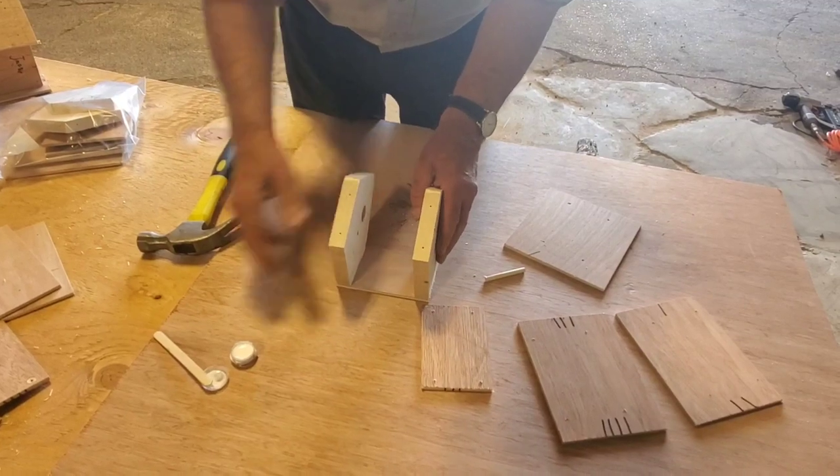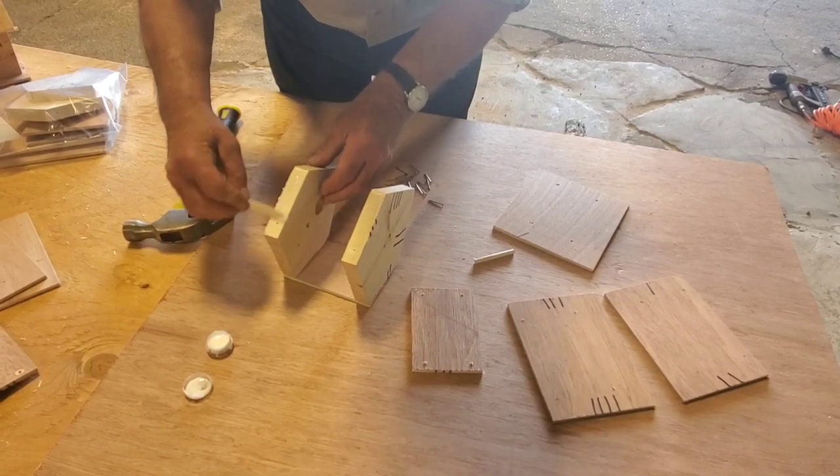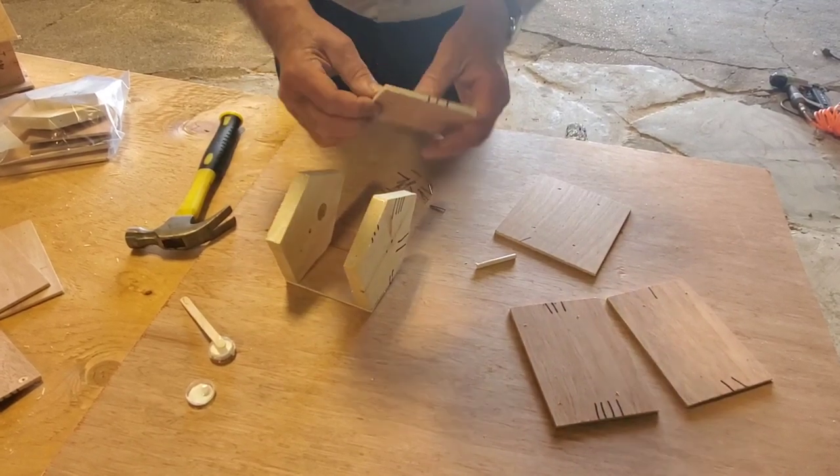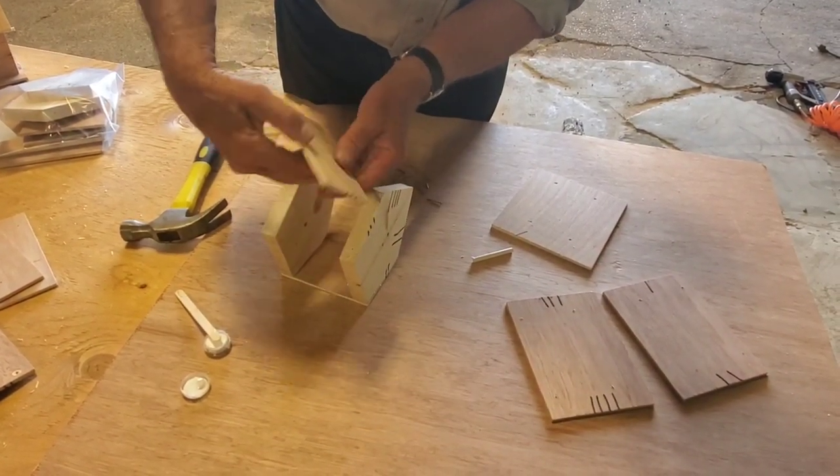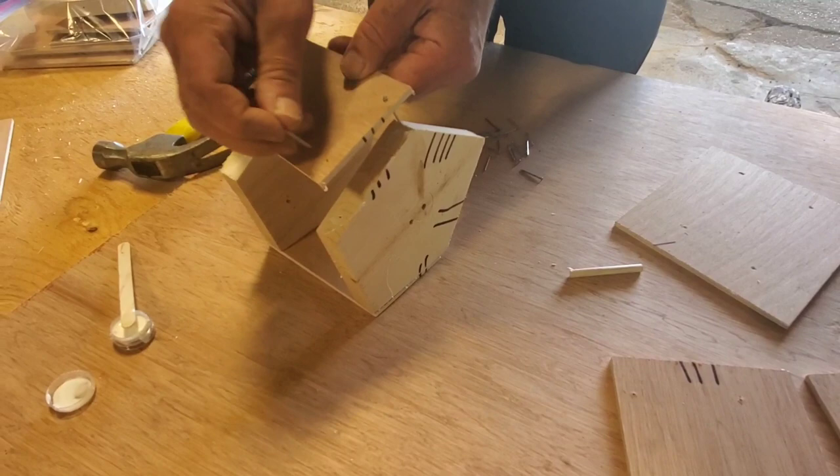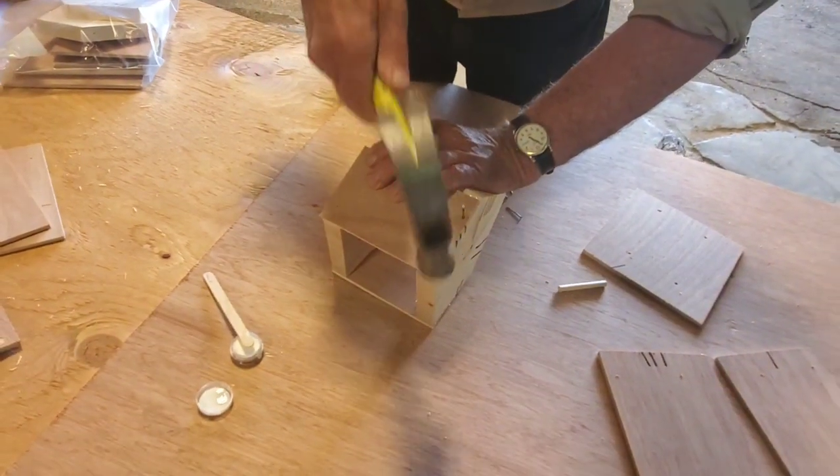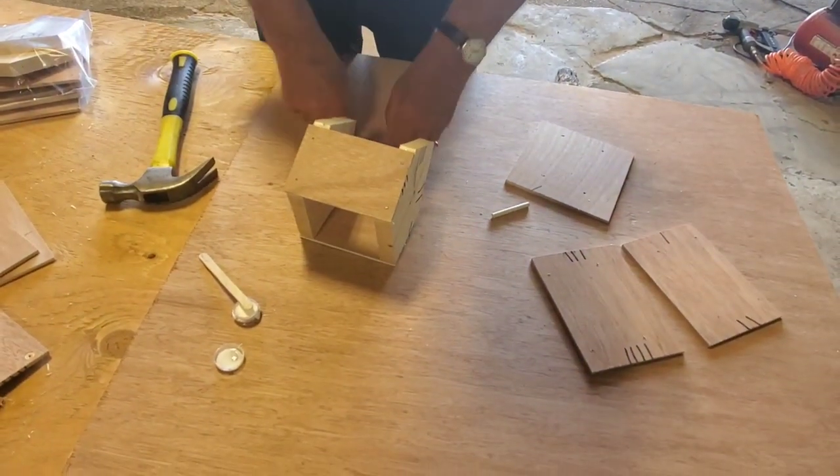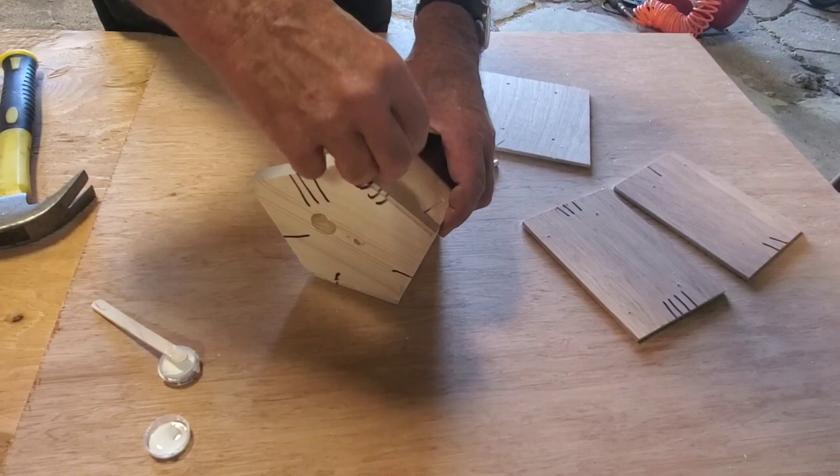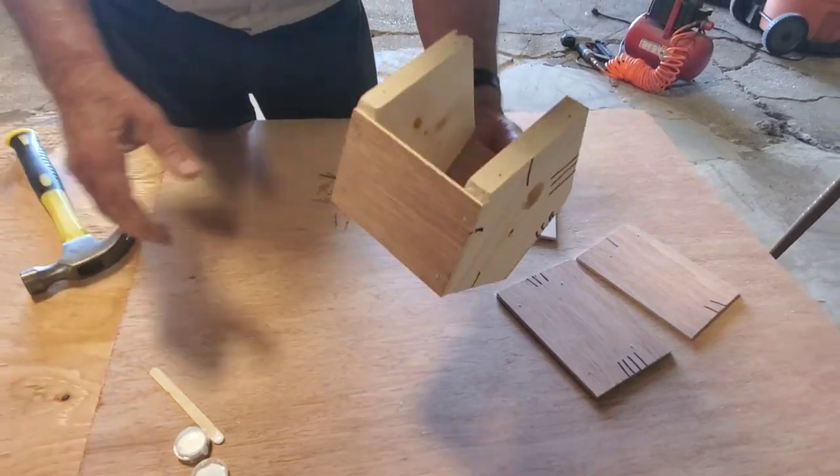Turn your birdhouse over. Put the glue on the other side. Grab your other side piece and line it up. Make sure it's turned the right way so that it lines up. Then you can put your nails in and align them with the holes and drive the nails in on that side. Then you do the same on the other end, making sure that your marks are lined up.